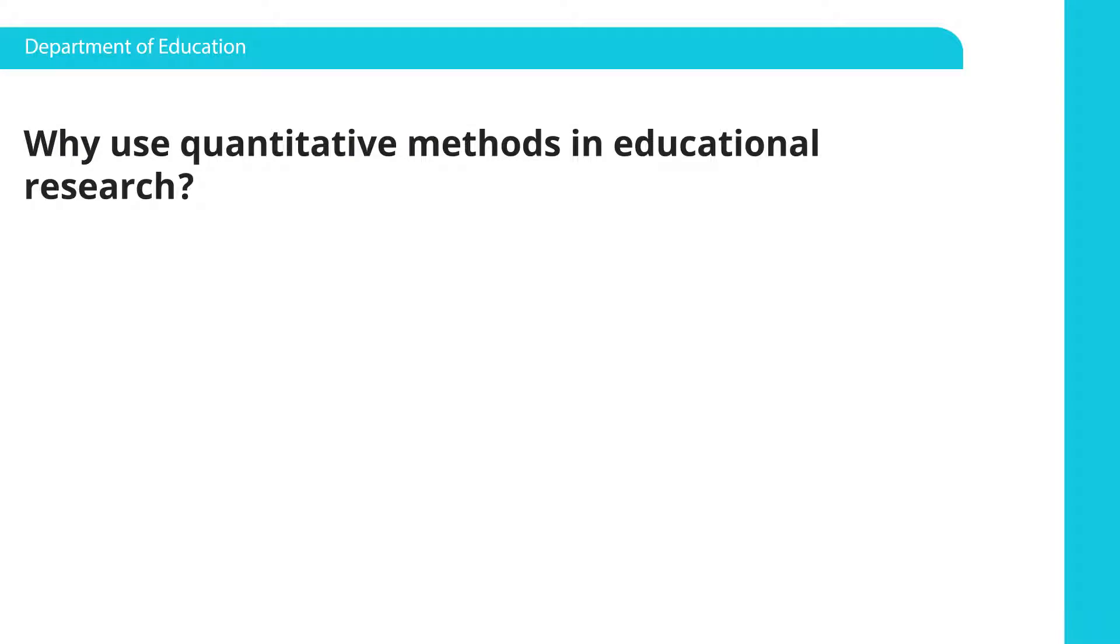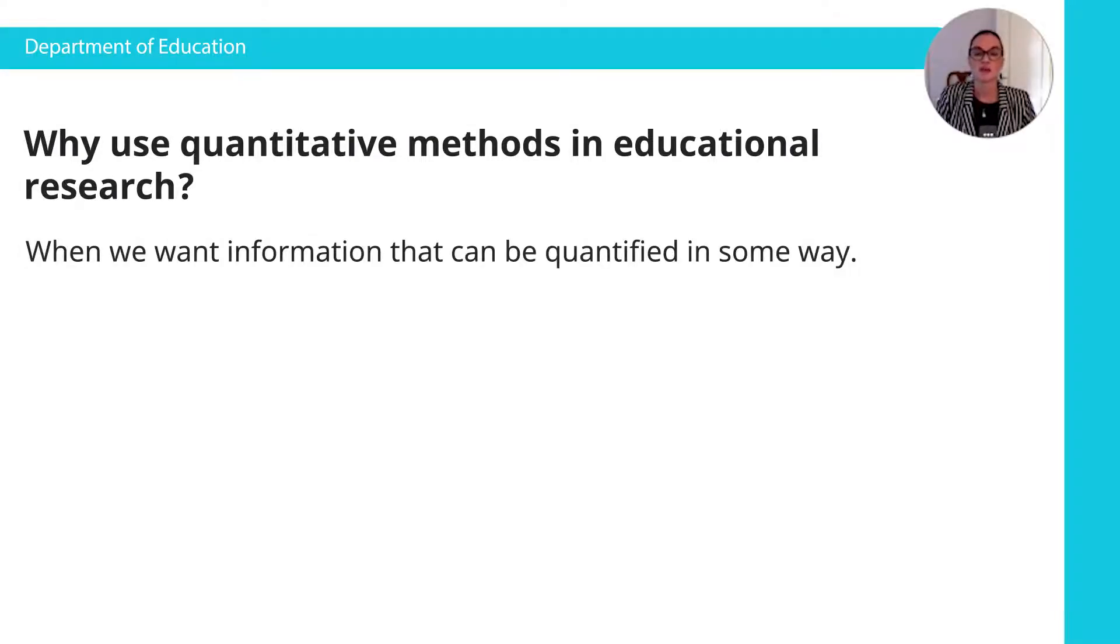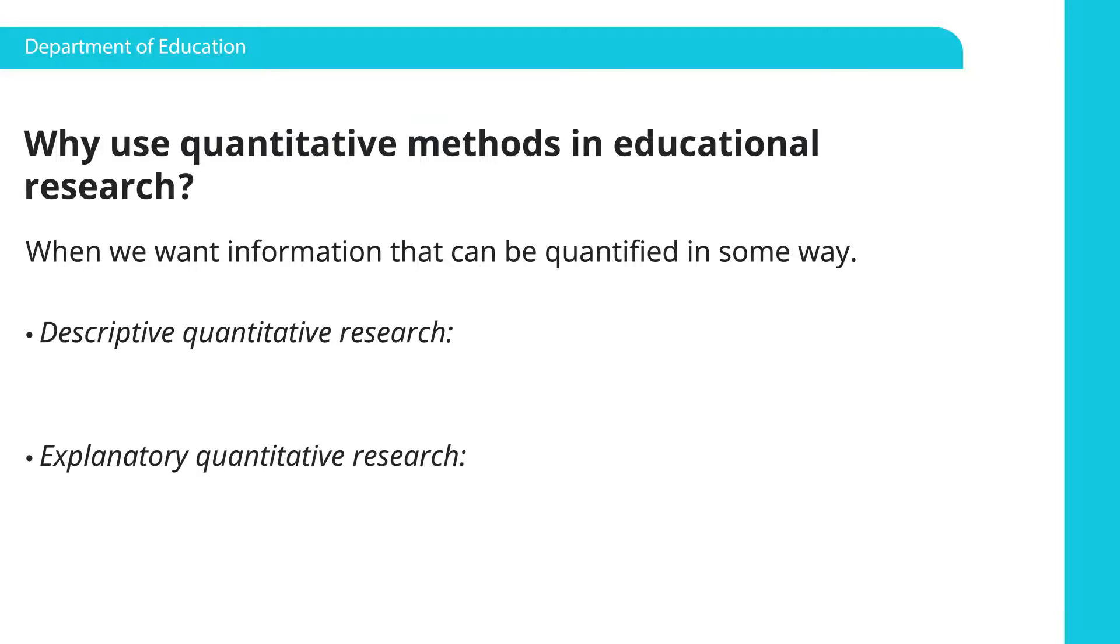So why use quantitative methods in educational research? When we want information that can be quantified in some way, then we use quantitative data collection methods. When we analyze that data, we can present it in two different ways, in a descriptive way or in an explanatory or exploratory way. So descriptive quantitative research is to portray an accurate profile of data about persons, events or situations.